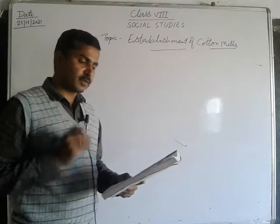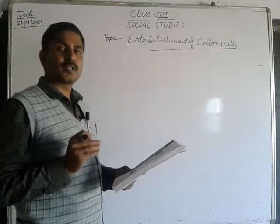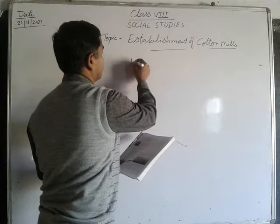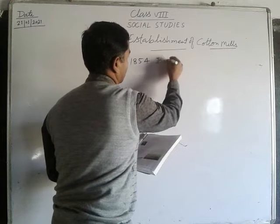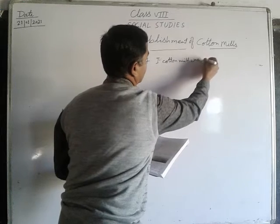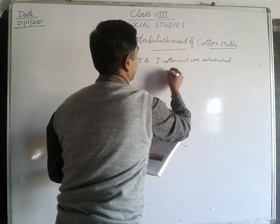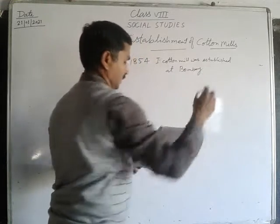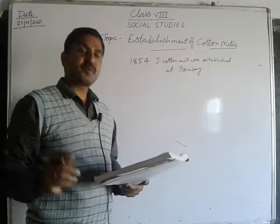In 1854, the first cotton textile mill was established in India at Bombay. It was mainly a spinning mill.